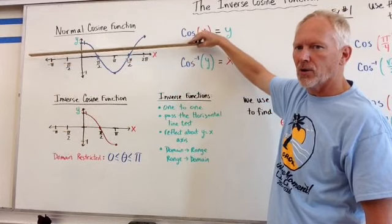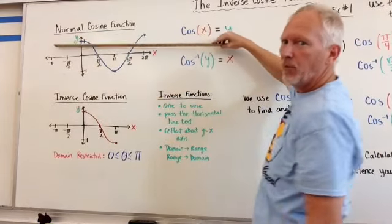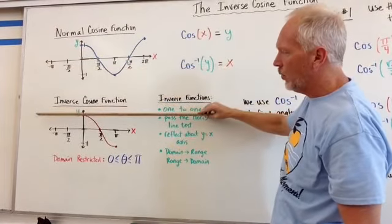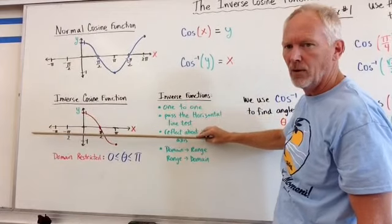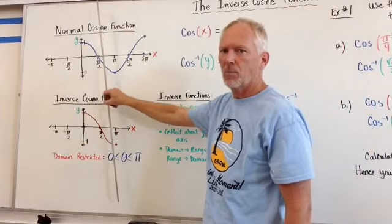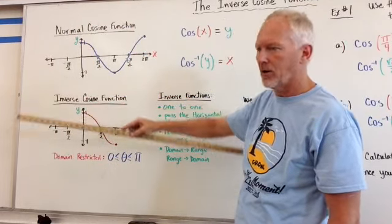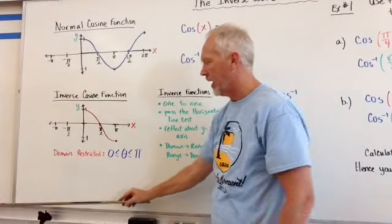Horizontal line test says it cannot intersect at two different points. It must only intersect at one point. The vertical line test, cosine function passes all the way along, as well as the inverse. But as soon as we get in the inverse, now we're concerned with a horizontal line test.